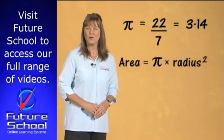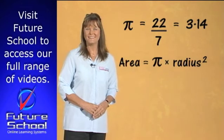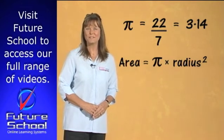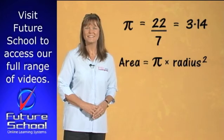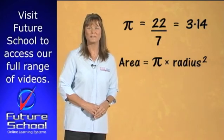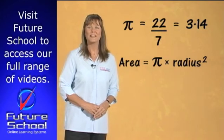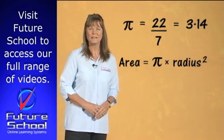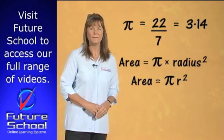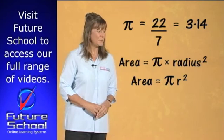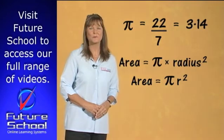The formula for area equals pi times the radius squared. R stands for the radius measurement of the circle, so the formula is: area equals pi r squared.